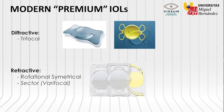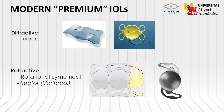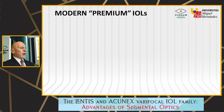Then we have the refractive, which can be rotational symmetrical, or sectoral varifocal — which is the one we are going to deal with today. Rotational and symmetrical have the disadvantages previously mentioned: the dispersion of light is about 20%, and creates halos and glare, which are significant. The sectoral varifocal has distinct advantages that make this faulty phenomenon very rare or even absent, depending on the power of the lens.